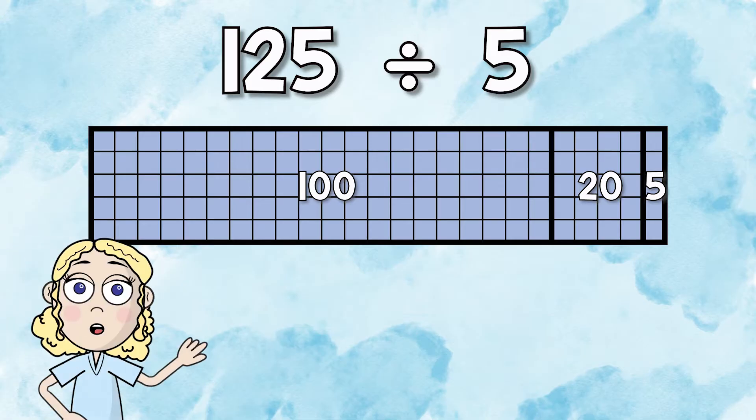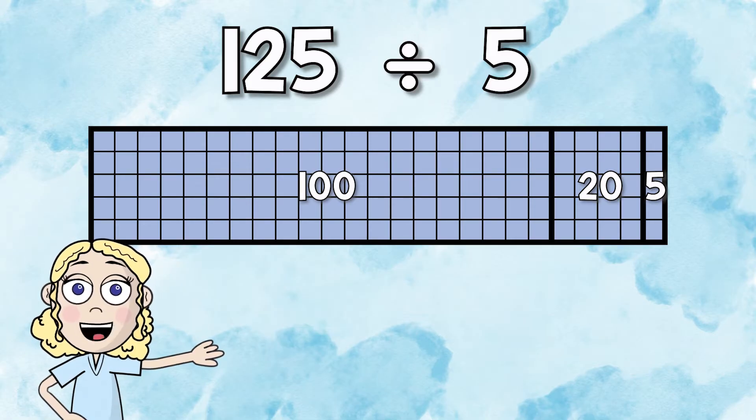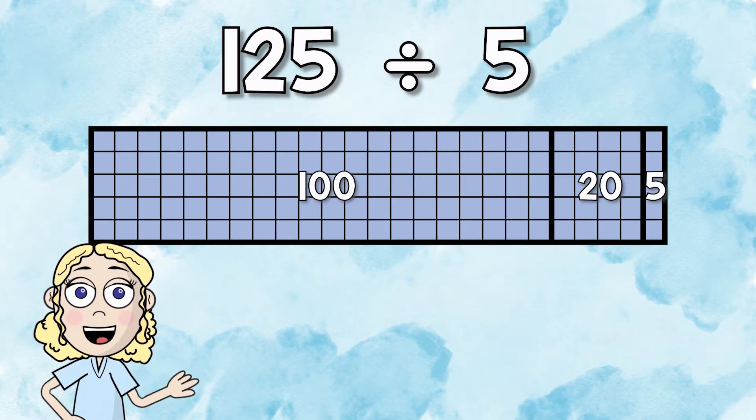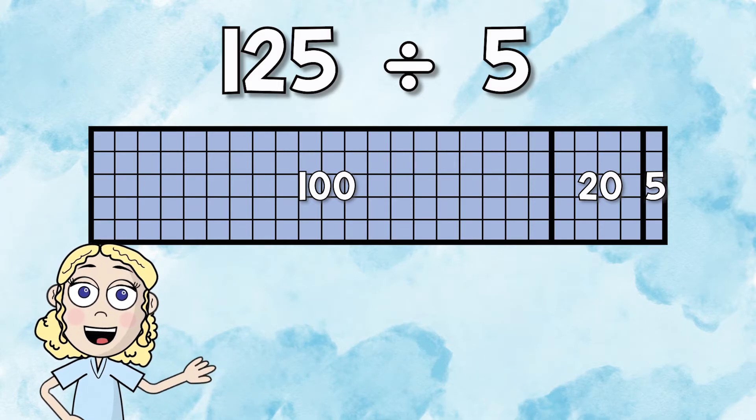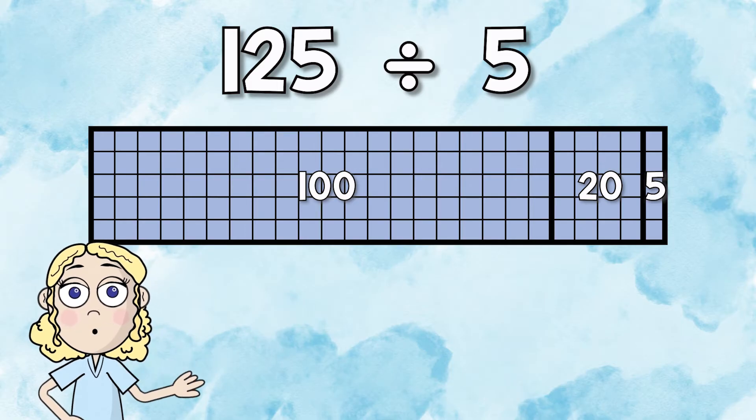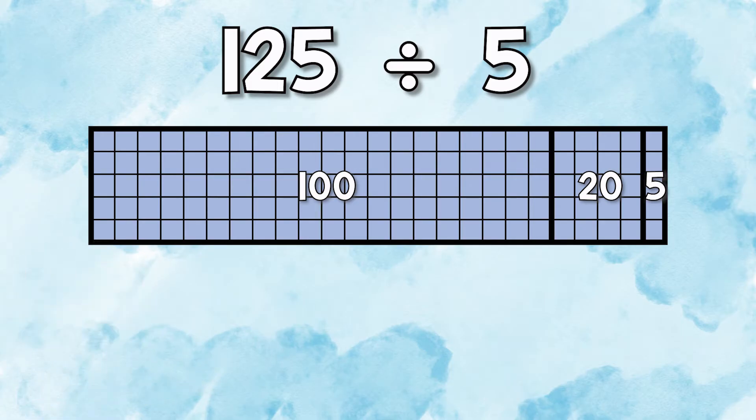The area model here actually shows that number broken down. As you can see, we actually have a grid inside of the area model. We don't have to draw the array or grid every time we divide using partial quotients, but just know it's there, and that's why we are actually drawing a rectangle to break it down by place value.